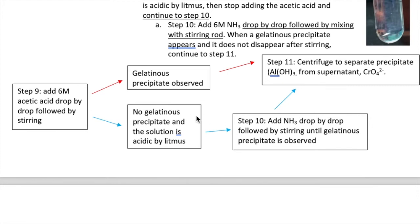Okay, let me just summarize what I just said here, which is steps 9 to 11. Step 9 is the addition of the acetic acid. Again, if you see a precipitate during this step, you're going to skip step 10 and go directly to step 11, which is centrifugation to separate the pellet from the supernatant.